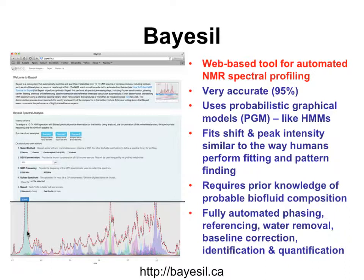We've been working on a thing called Bazel — it's actually on the web. It hasn't been published yet; just submitted the paper. This one is a lot faster. What would have taken Batman nine hours, this one takes about three minutes. It's very accurate. Everything is automated — all of the baseline correction, all the phasing, all of the water removal, reference identification — all of that is automated. That took a long time to figure out.